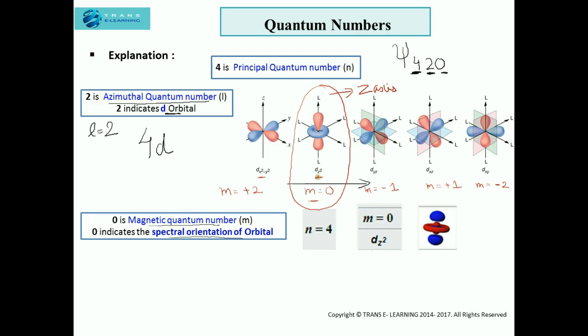This dz² is symmetrical about the z-axis with dumbbell shape and a donut-shaped electron cloud in the center. So there is a reason ψ420 is written as 4dz².